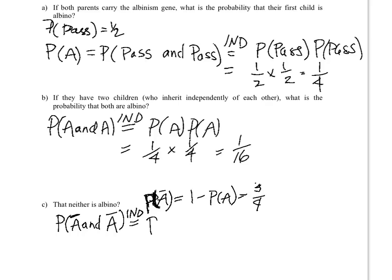And so the answer is going to be, because of independence, we multiply the probability of not being albino in the second one, not being albino. We multiply three quarters times three quarters and get nine sixteenths, not fifteen sixteenths.